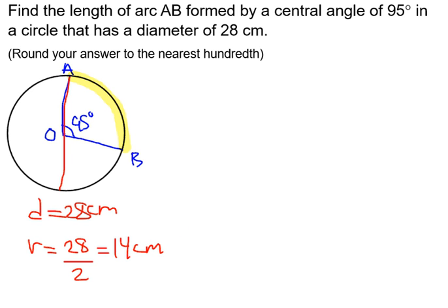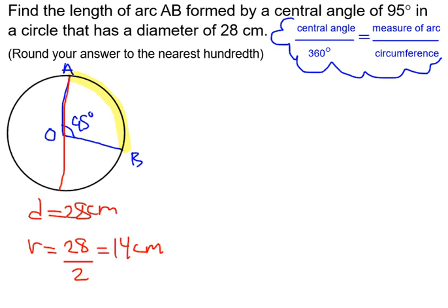Let's look at the formula. The formula you should know is that the central angle is equal to the measure of the arc if you know that 360 degrees is equal to the circumference. You can say that the central angle over 360 equals the measure of the arc over the circumference.